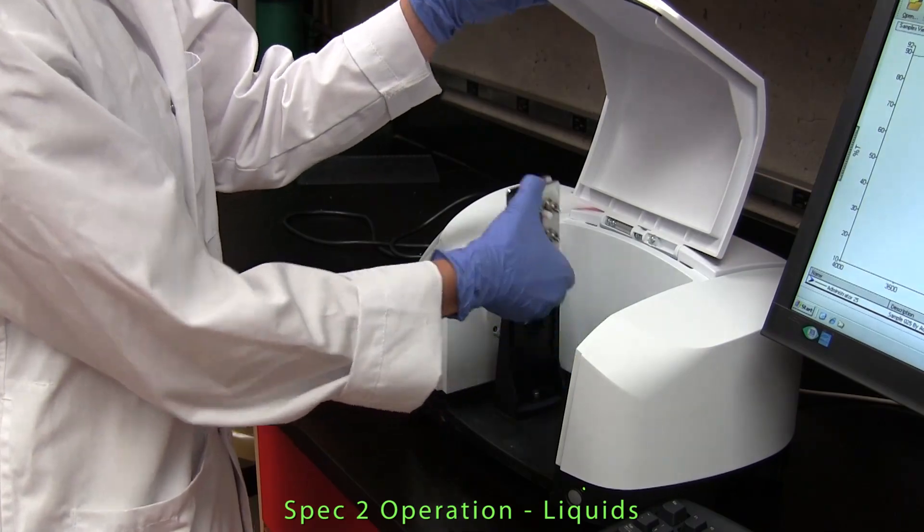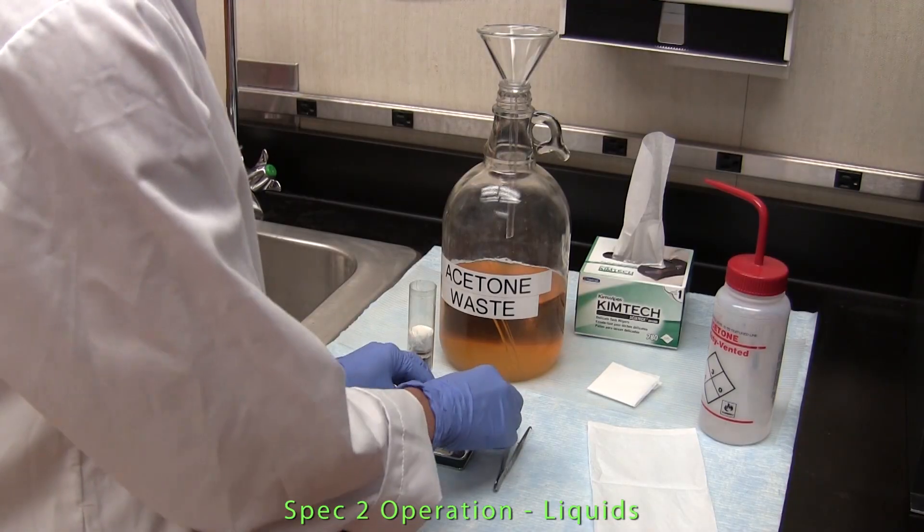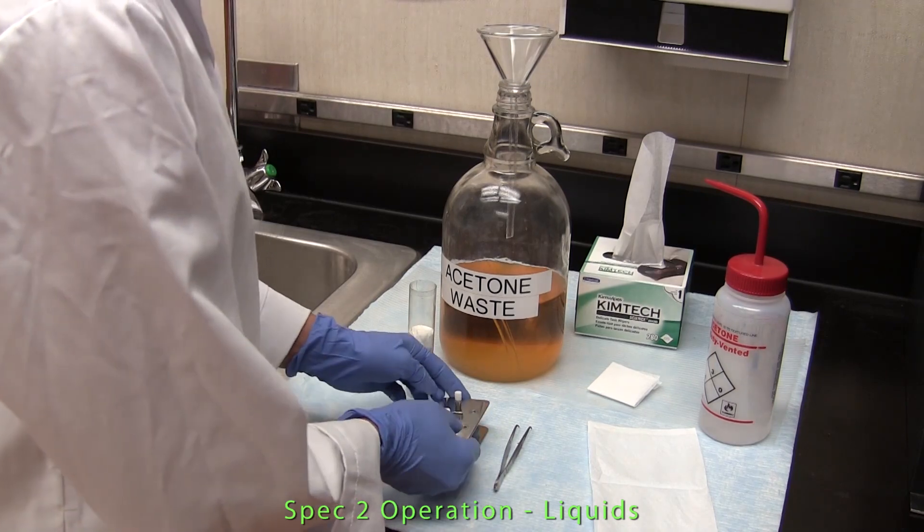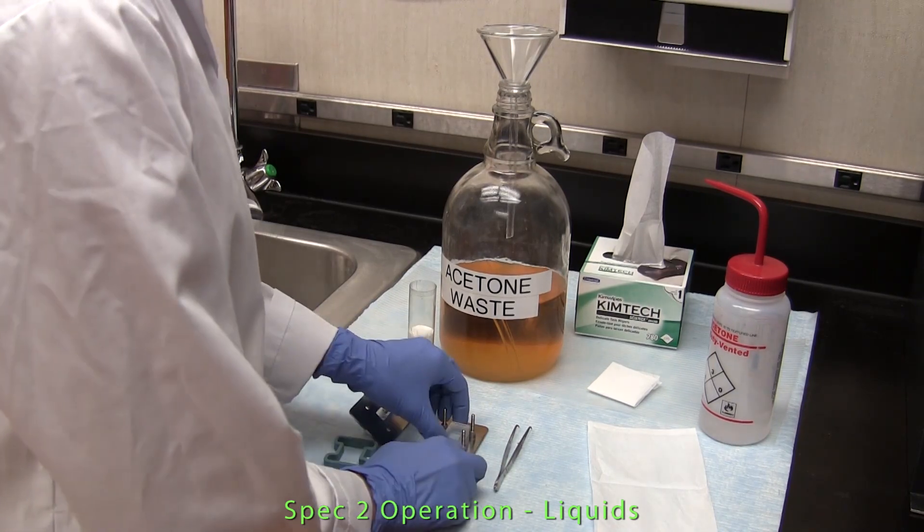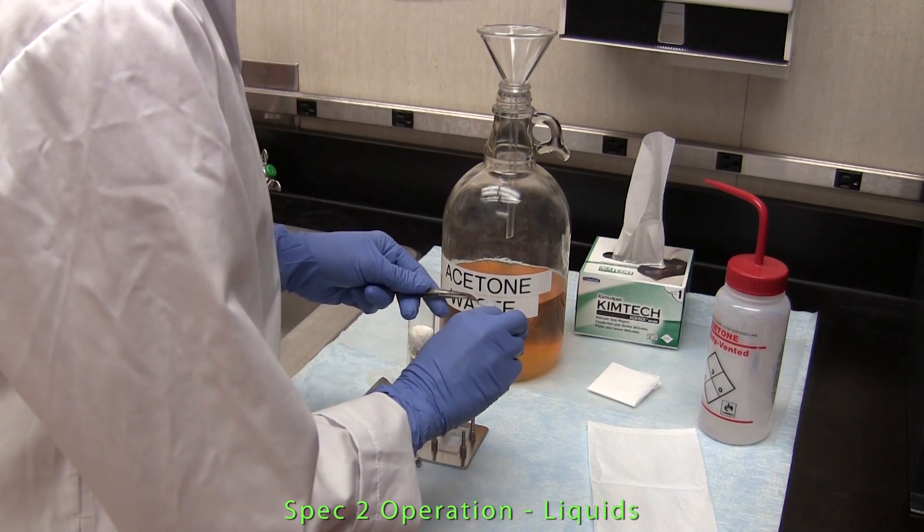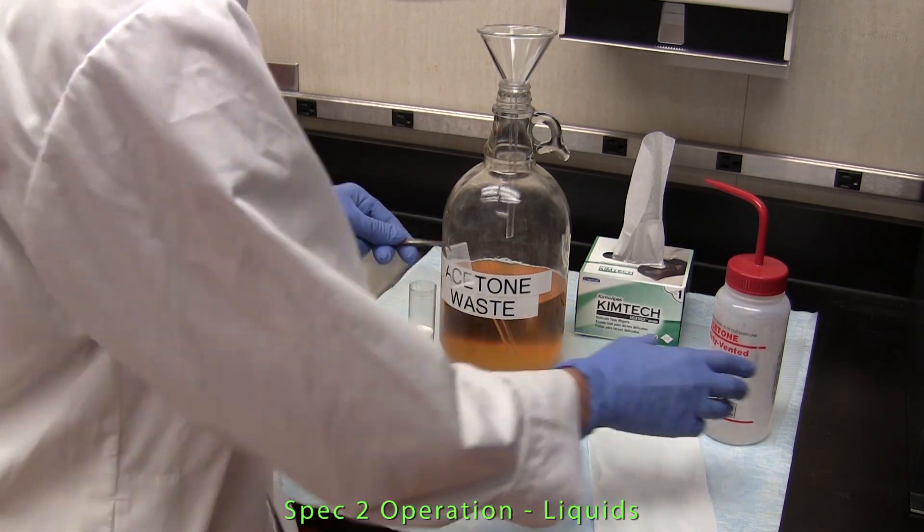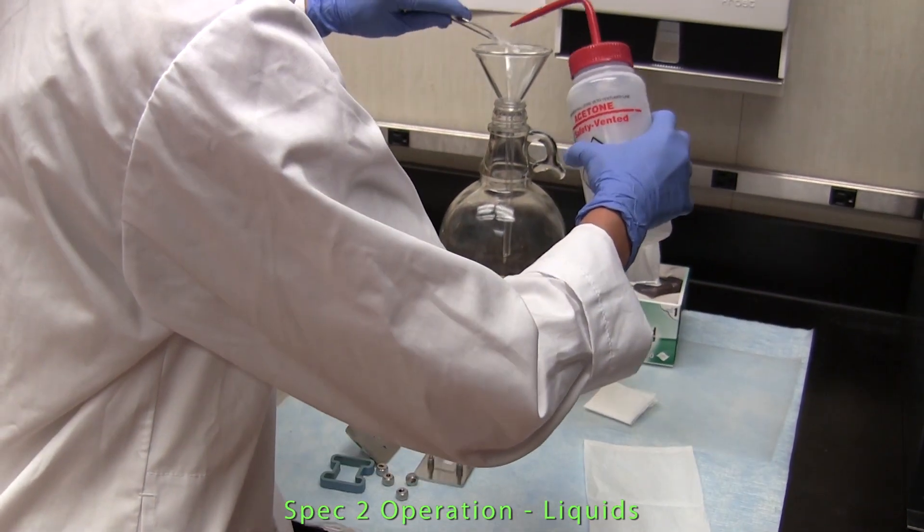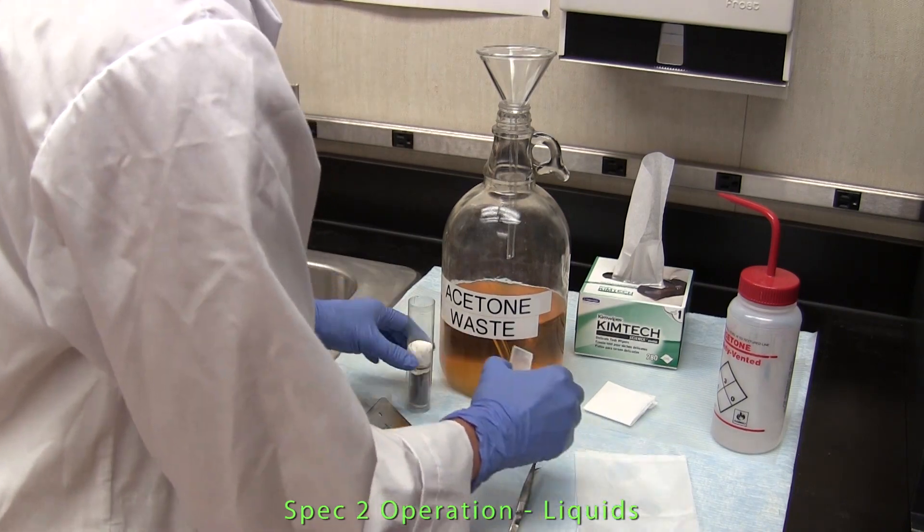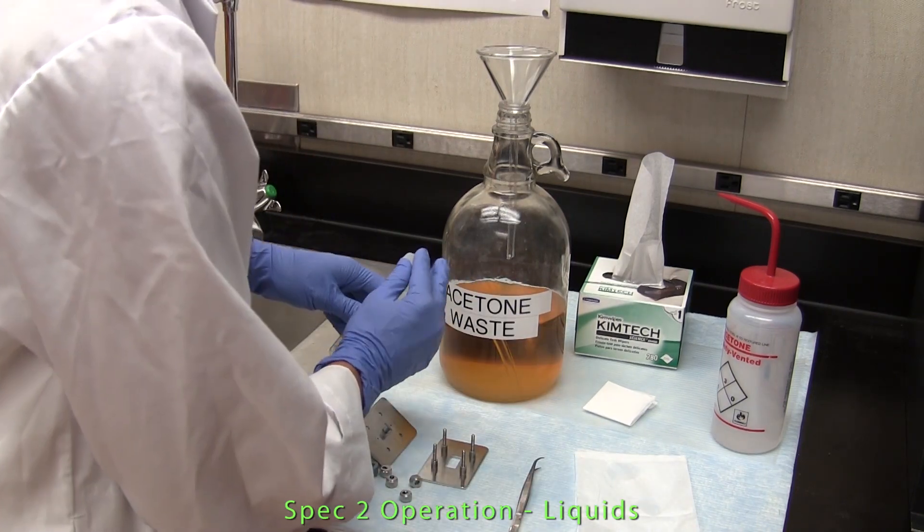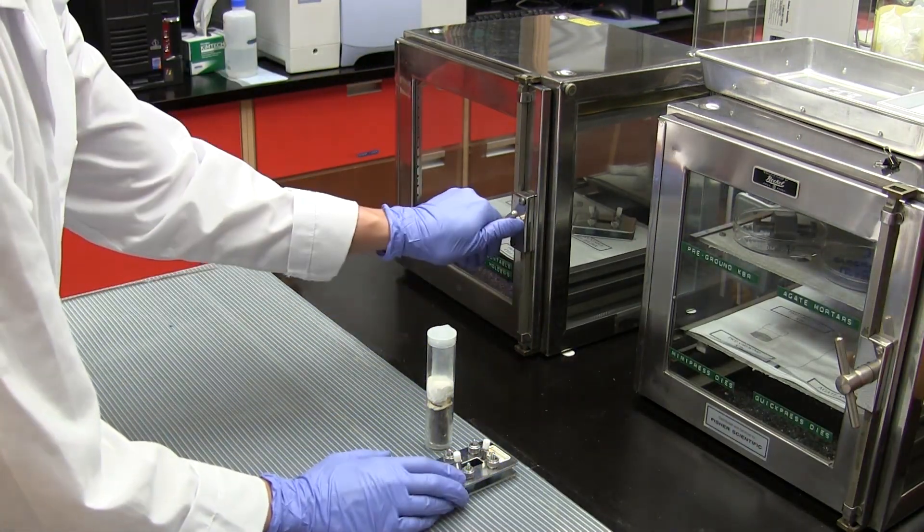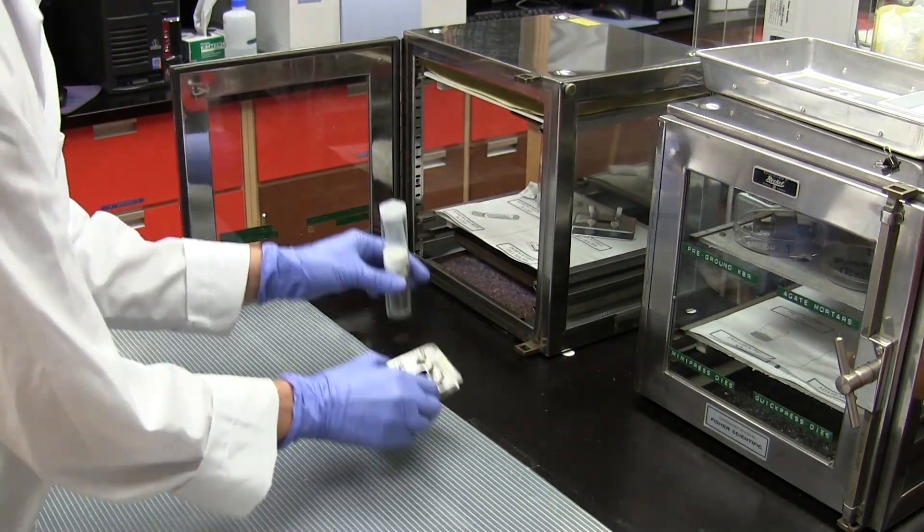The demountable cell is removed from the sample compartment and disassembled. The sodium chloride plates are cleaned with acetone. Once cleaned, they are wiped dry and returned to the storage container. The pieces of the demountable cell are reassembled and together with the sodium chloride plates, returned to the desiccator.